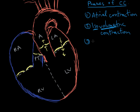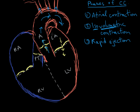Phase three is the rapid ejection phase. The left ventricle has contracted so much that blood is now allowed to flow out through the aortic valve and around the body — up to the head and arms and down to the rest of the body. It's called rapid ejection because it's high-volume flow. Phase four is reduced ejection, because the majority of blood volume has already exited in phase three, so we're still ejecting blood but in smaller amounts.